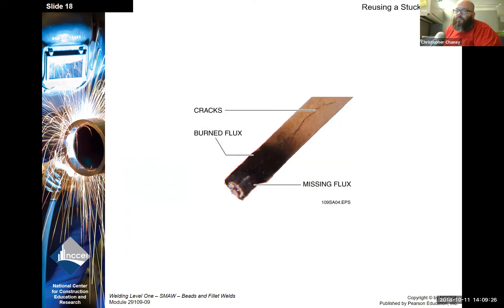Reusing an electrode. A few things to watch out for when you do this is there's missing flux or large cracks that can cause the flux to come off. The flux really does help a lot in stabilizing the arc.